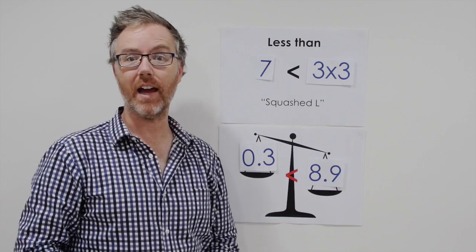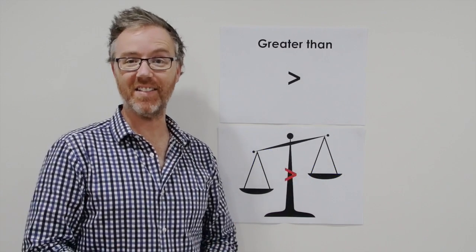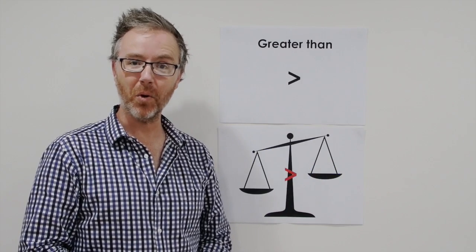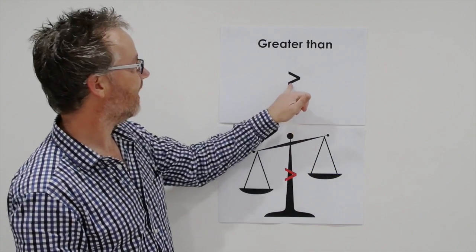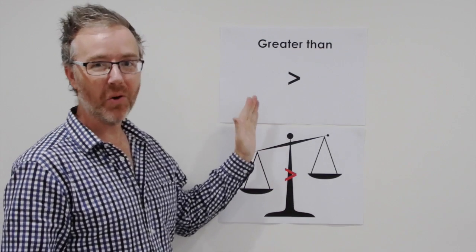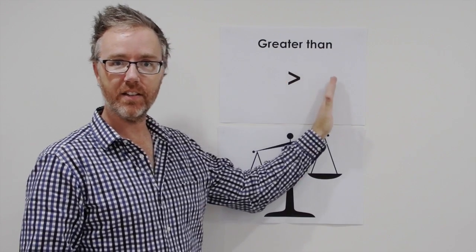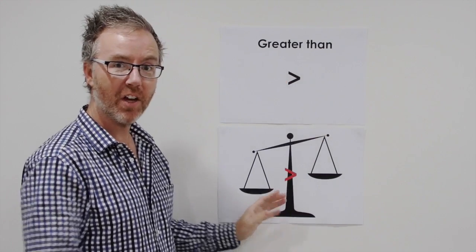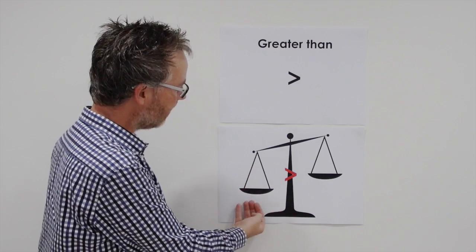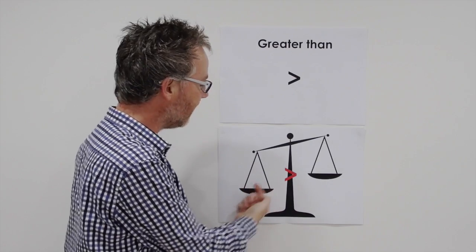Let's now have a look at greater than. Now greater than is the opposite symbol of less than, as we have here. And we read it - we always read it left to right. This side is greater than this side. Here we have our scales, but in this case the left is heavier, there's more mass.